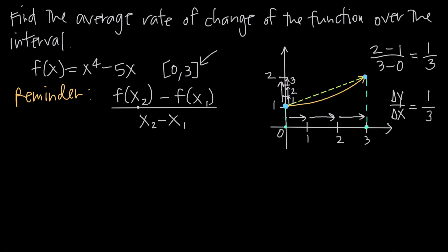The formula is the function's value at the right endpoint minus the function's value at the left endpoint, divided by the right endpoint minus the left endpoint. Our interval 0 to 3 corresponds to x sub 1 and x sub 2. When we find f of x sub 2, we plug 3 — the right endpoint — into the original function.